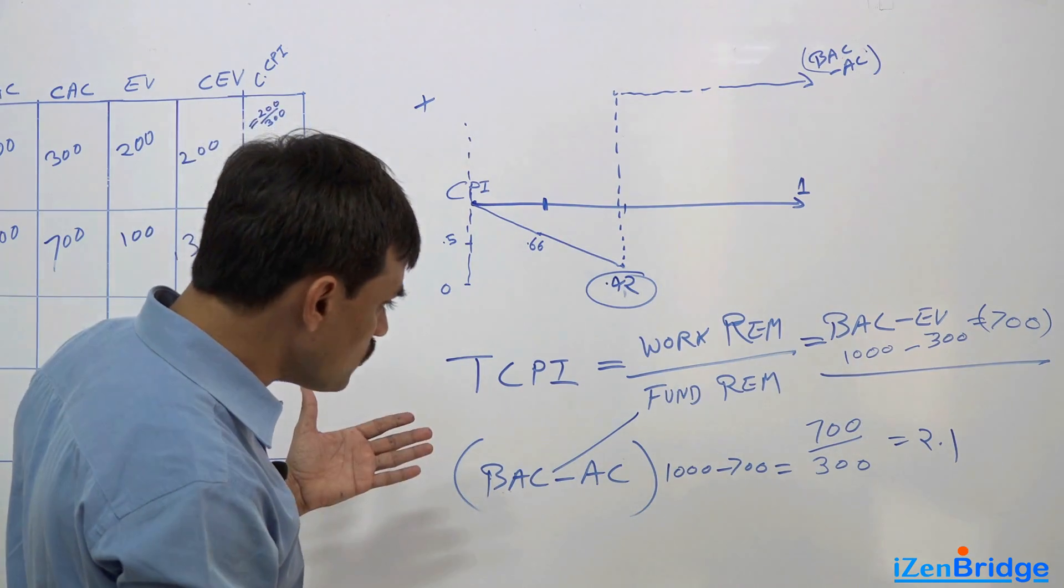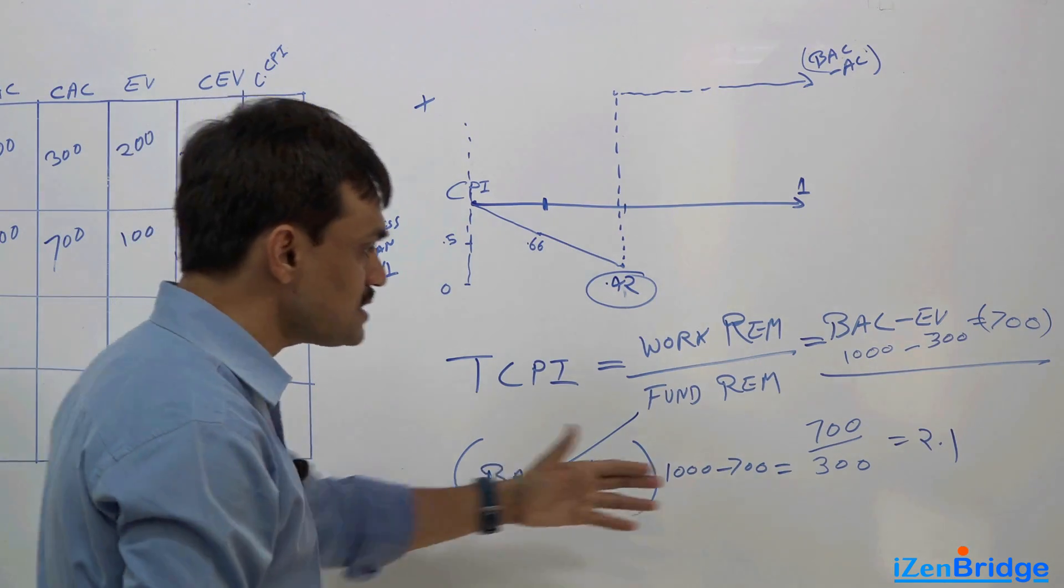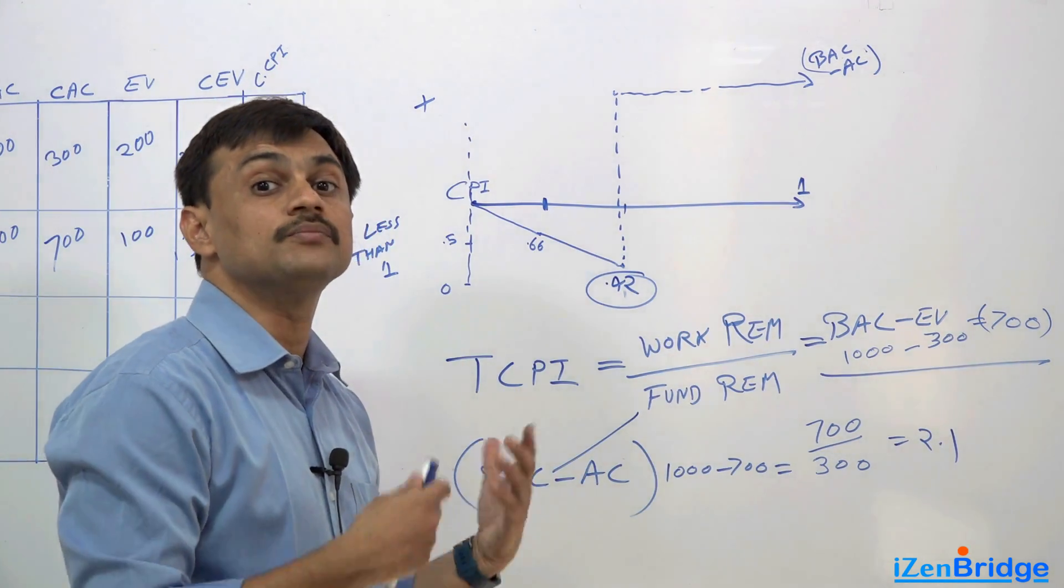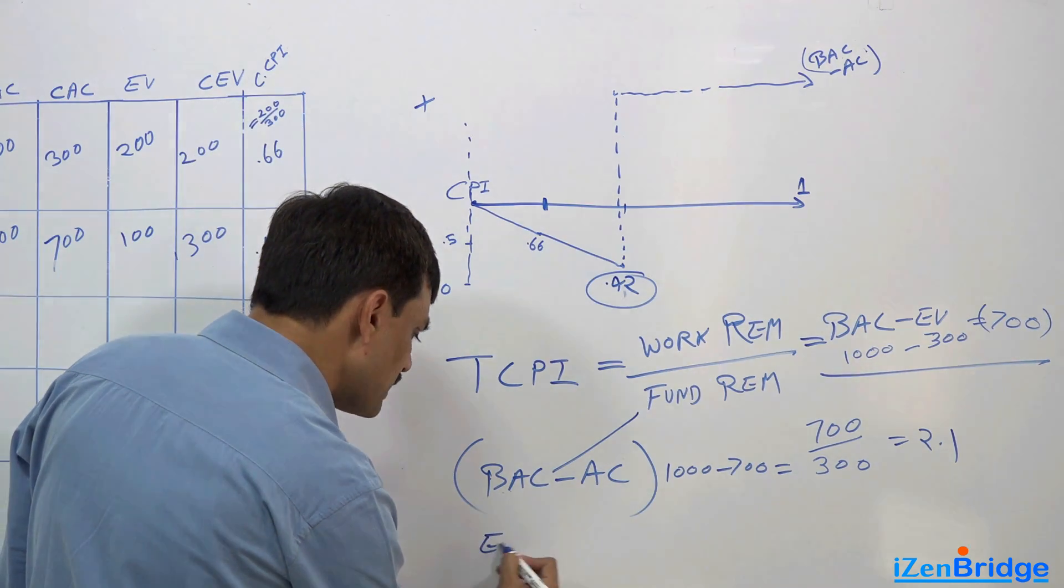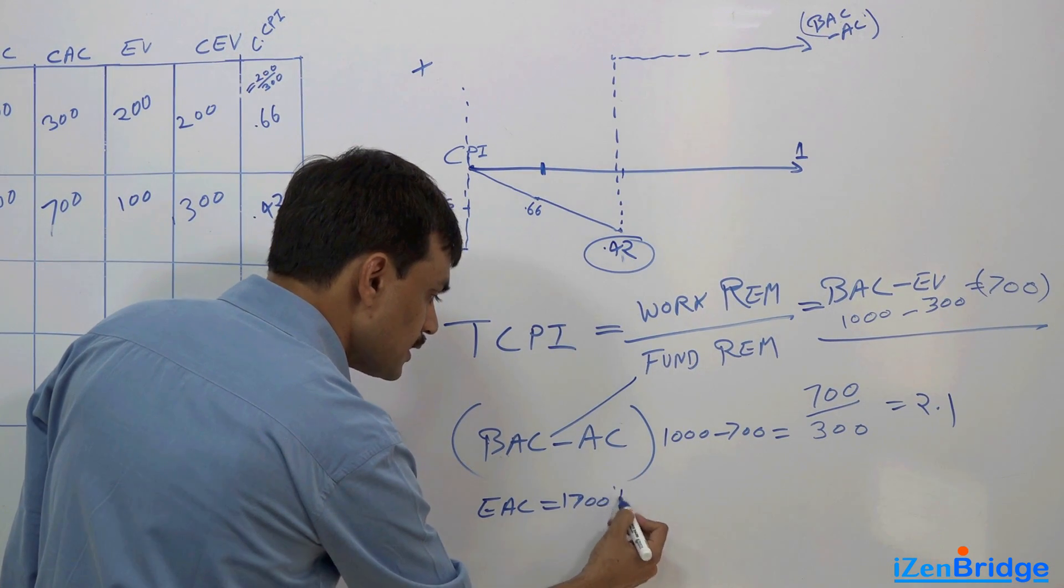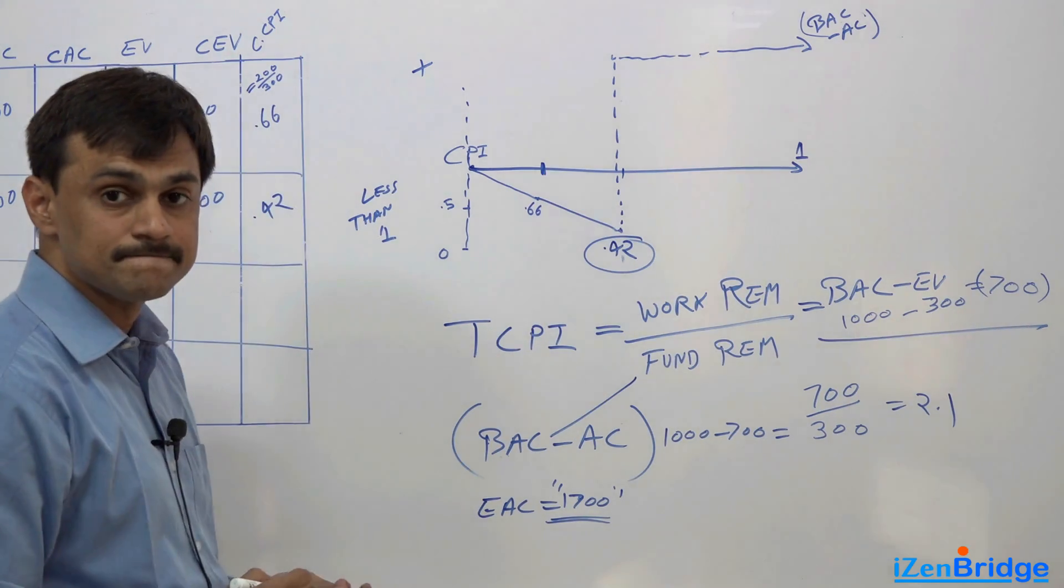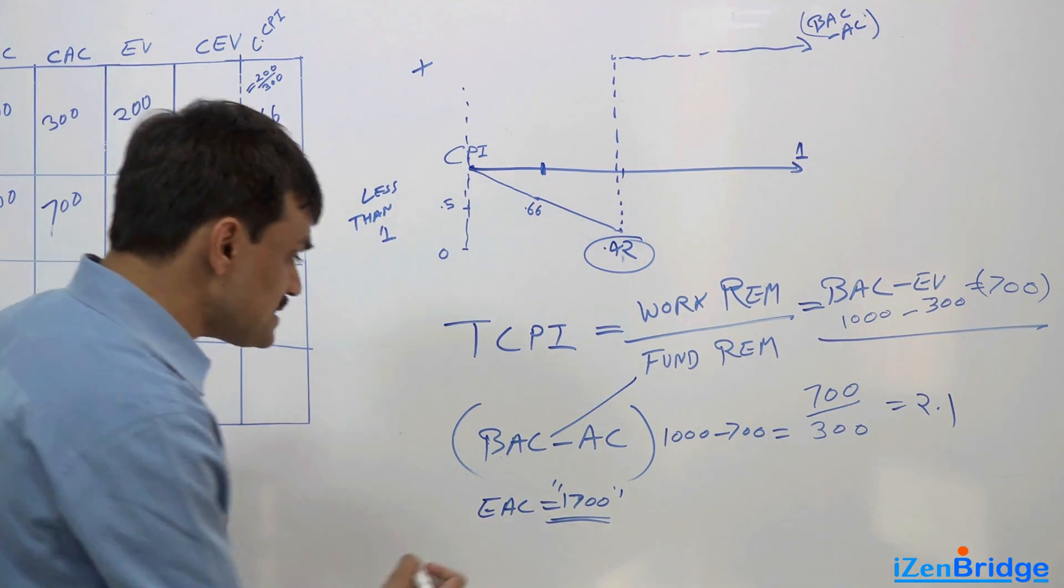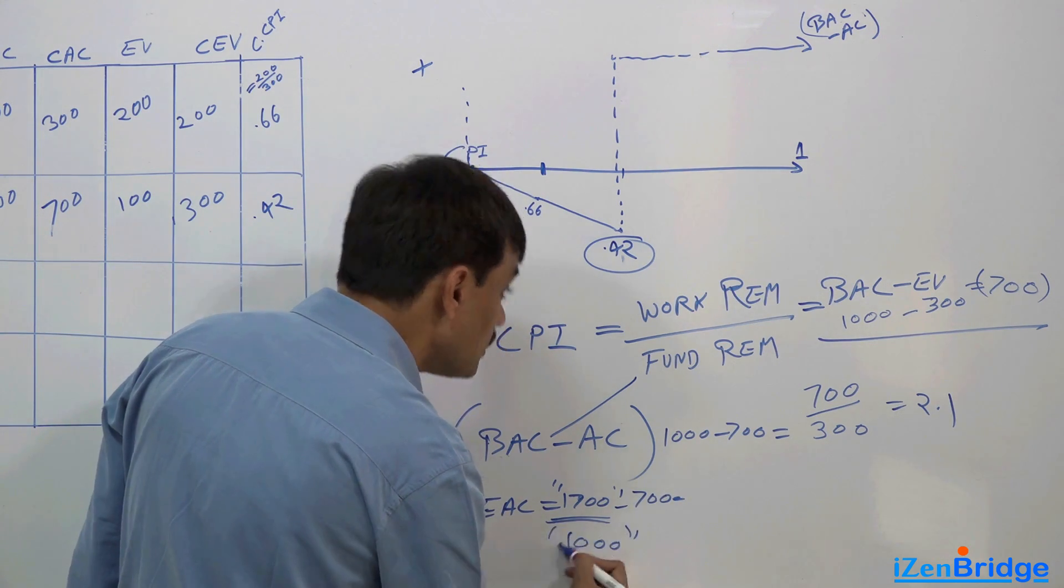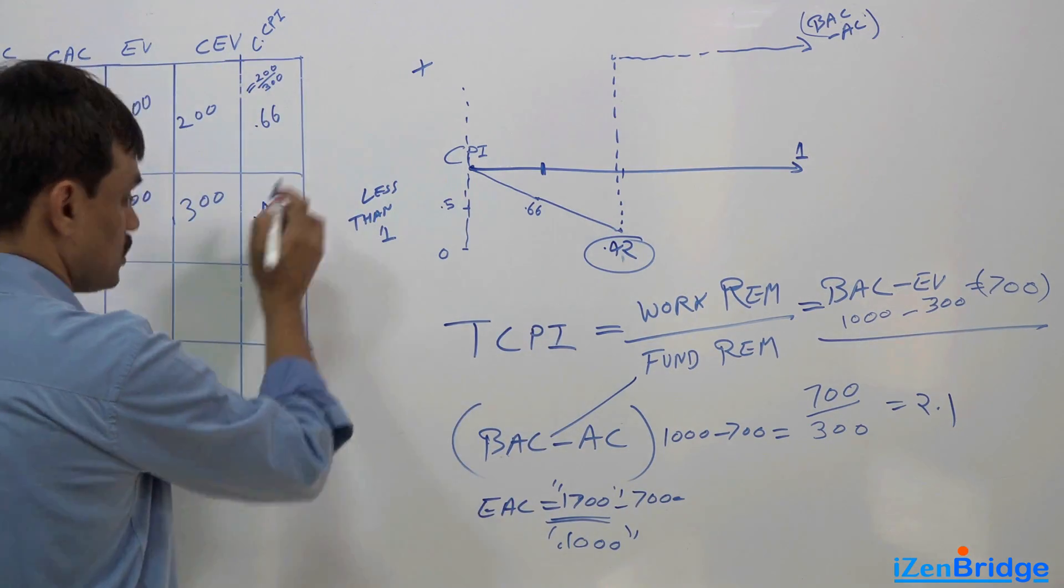So our remaining work was $700 and our remaining fund was just $300. What if our management gives us $700 more? So it says I give you more money - estimated completion I give you $1,700. Can you take care of the work now? So when we get more money, then $1,700 minus $700 I have spent - I say I have $1000 left.